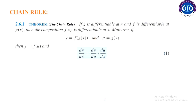Chain rule: if g is differentiable at x and f is differentiable at g of x, then the composition f composed with g is differentiable at x. That is, if y equals f of g of x and u equals g of x, then dy by dx equals dy by du multiplied by du by dx. We use this rule when we have composite functions where y depends on u and u depends on x — f is a function of g and g is a function of x.